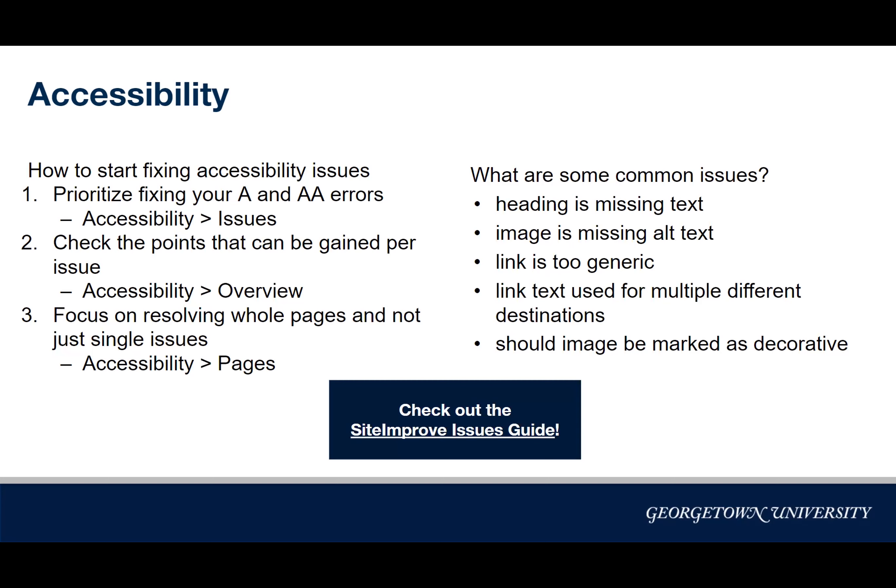One way to start fixing accessibility issues is to prioritize Level A and AA issues first, since these are the issues we need to resolve to be compliant with university policies. To do this, log into Siteimprove and from the main menu navigate to Accessibility, then Issues. From there you'll see a list of all issues on your site organized by level — Level A first, then AA, then AAA. You can also click on a specific issue and it will list all the pages where that issue is located.